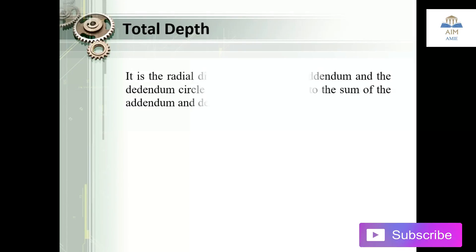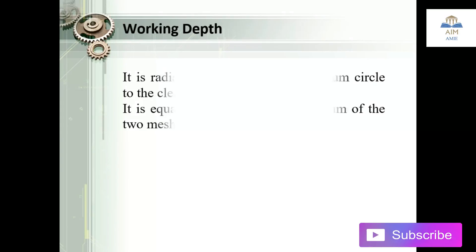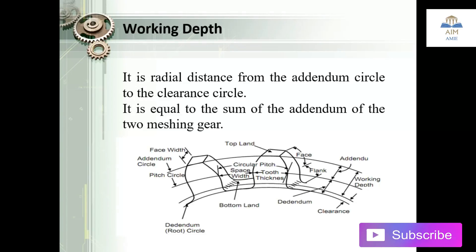The next one is the total depth. Total depth is the radial distance between the addendum and the dedendum circle of the gear. It is equal to the sum of the addendum and the dedendum — essentially from the top to the bottom of the tooth. Working depth is the radial distance from the addendum circle to the clearance circle. It is equal to the sum of the addendum of the two meshing gears.